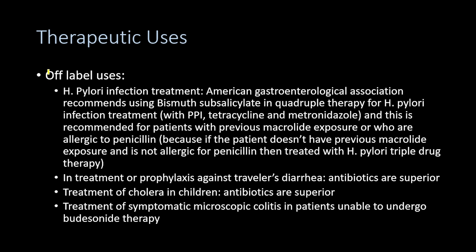Regarding off-label uses, bismuth subsalicylate is used for H. pylori infection treatment. The American Gastroenterological Association recommends it in quadruple therapy with proton pump inhibitors, tetracyclines, and metronidazole — recommended for patients with previous macrolide exposure and for patients allergic to penicillin.